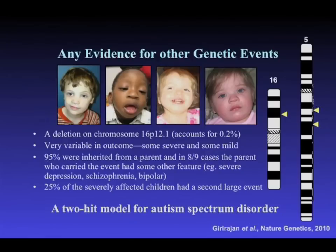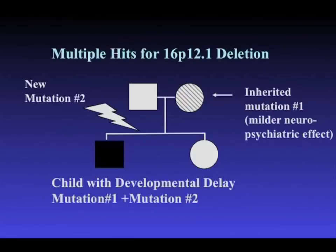We thought perhaps the carrier parent had one of these related comorbid phenotypes. But why did we ascertain these kids as developmentally delayed? When we looked at the entire genome for large copy number variation, we found that in 25% of the cases we had ascertained, there was another deletion or duplication at a different chromosomal region. In this population, we would expect to see two CNV hits in about 0.4%, so this was highly significant — too many double hits in kids with developmental delay with the 16p12.1 deletion.